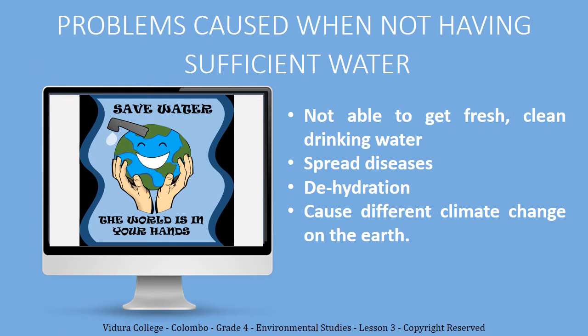Now we are going to discuss the problems we have to face when we don't have sufficient water. Can we live without water? No, we can't. If water is limited, we will not be able to drink clean fresh water, which will spread diseases and cause dehydration — that means a decrease in bodily fluids. It can also cause different climate changes on earth such as droughts.